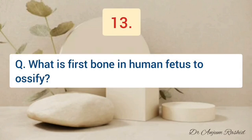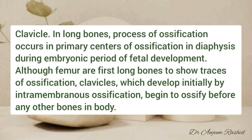What is the first bone in the human fetus to ossify? The answer is the clavicle. In long bones, the process of ossification occurs in primary centers of ossification in the diaphysis during the embryonic period of fetal development. Although the femur is the first long bone to show traces of ossification, the clavicle — which develops initially by intramembranous ossification — begins to ossify before any other bone in the body.